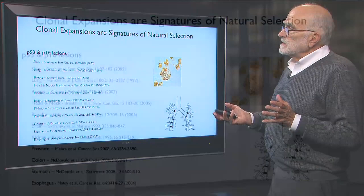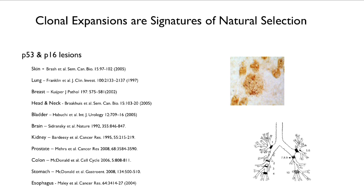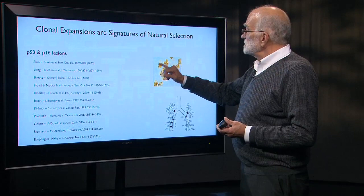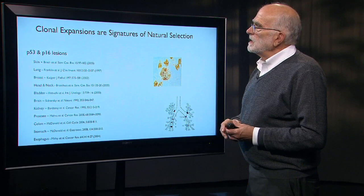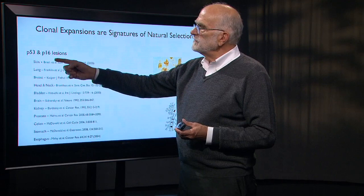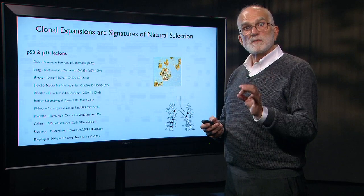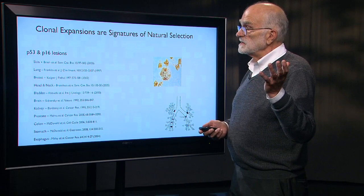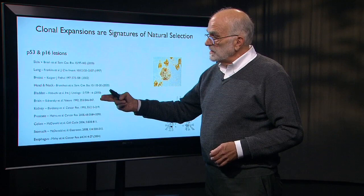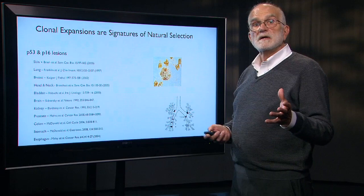If we ask whether there is evidence that clones are expanding — because if one clone in a cancer is expanding at the expense of other clones, that's a signal of natural selection — here are some clones of melanomas or neoplasms that could become melanomas in the skin. P53 and P16 mutations have been detected in expanding clones in skin, lung, breast, bladder, brain, kidney, prostate, colon, stomach, and esophageal cancer. So it's a widespread signature of clonal expansion.